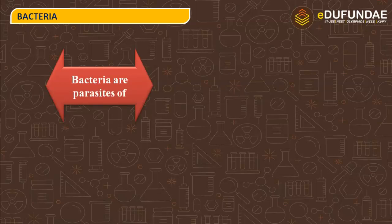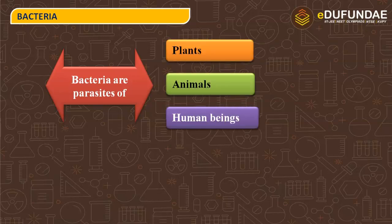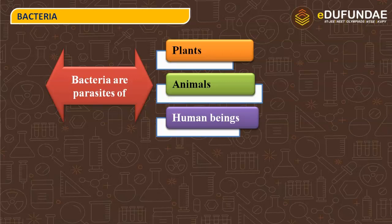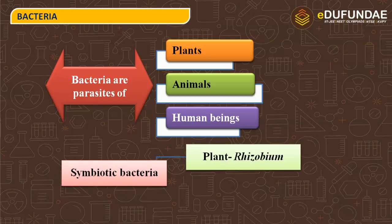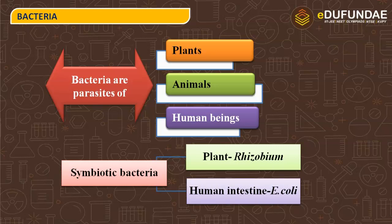Bacteria are parasites of plants, animals, and human beings — these are their hosts. A parasite is an organism that lives on the body of another organism to derive food and shelter. There are also symbiotic bacteria: in plants it is Rhizobium, and in the human intestine it is E. coli. In a parasitic relationship, they only fulfill their own needs from the host.